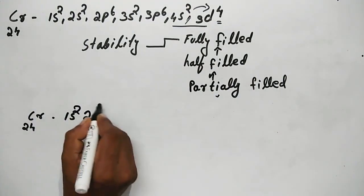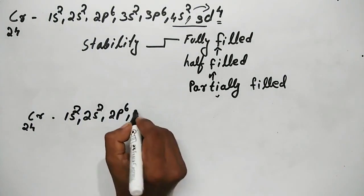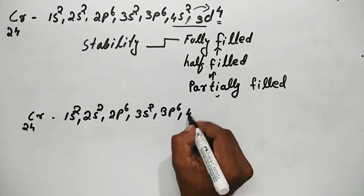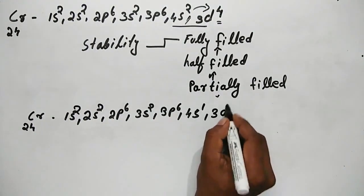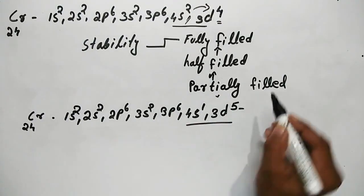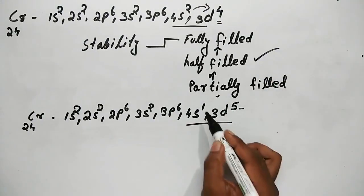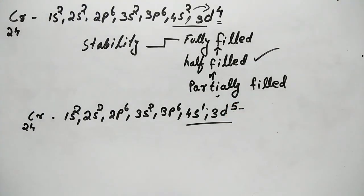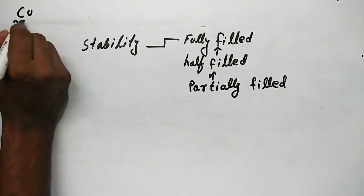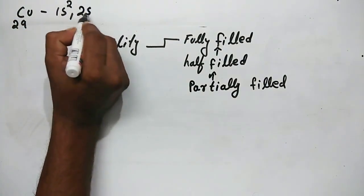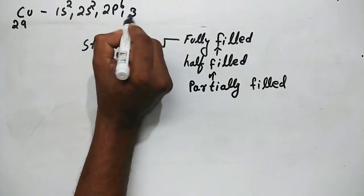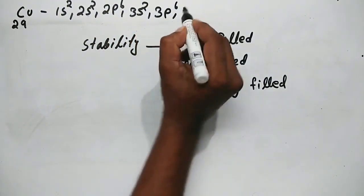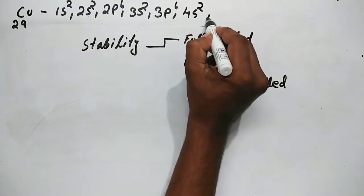For chromium's anomalous electronic configuration: 1s², 2s², 2p⁶, 3s², 3p⁶, 4s¹, 3d⁵. This is because the half-filled d subshell gives extra stability. The configuration rearranges from the expected 4s², 3d⁴ to 4s¹, 3d⁵ for stability.